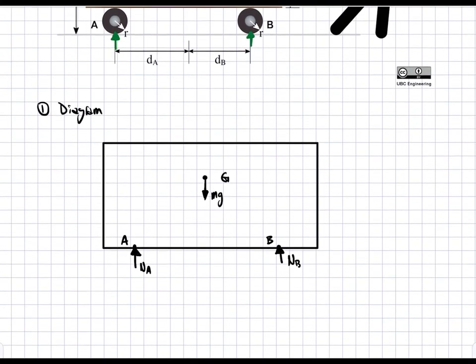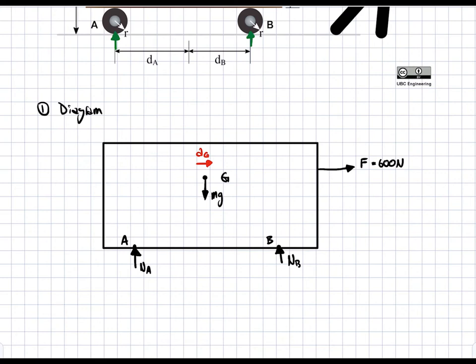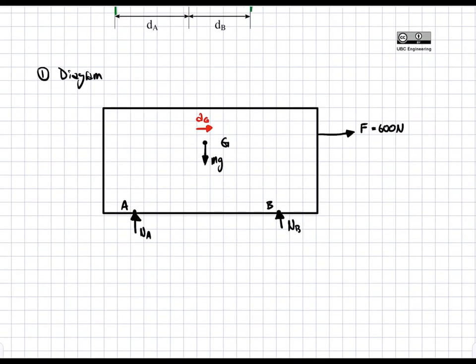We have one more force, which is the tension force of the string you're pulling the cart with. This is called F and it's equal to 600 Newtons. The last thing we have is an acceleration of the body — the direction is not given but we're going to determine it. This is Ag, the acceleration at the center of gravity. We've assumed a direction but we'll determine the magnitude and direction later.